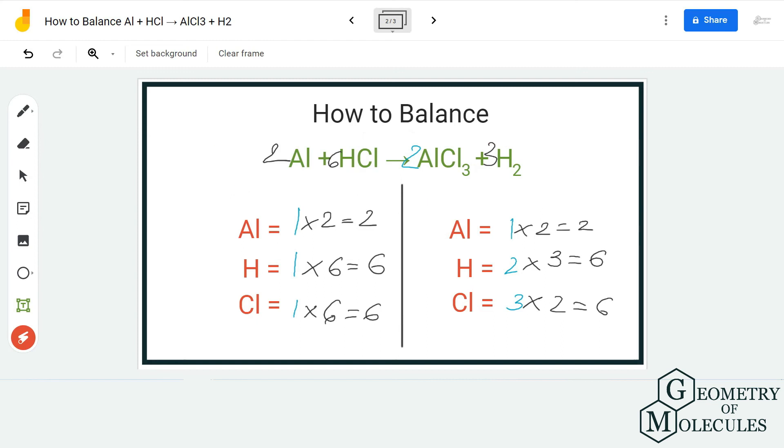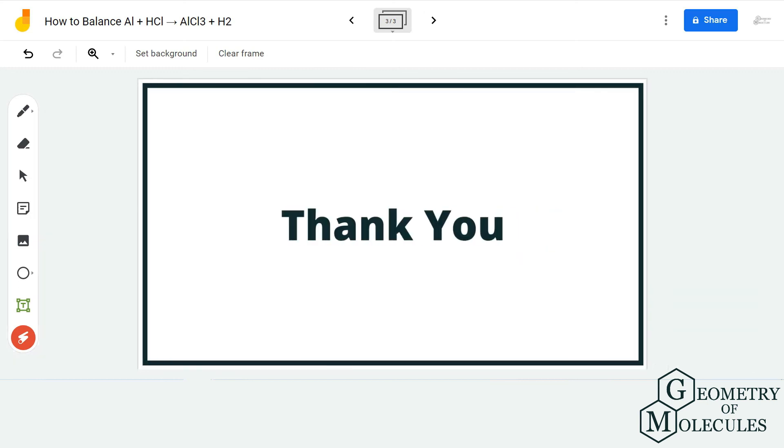We have 2Al plus 6HCl on the reactant side, 2AlCl3 and 3H2 on the product side. I hope this video helps you to understand. For more videos on Lewis structure, molecular geometry, and polarity of molecules, make sure to subscribe to our channel. Thanks for watching!